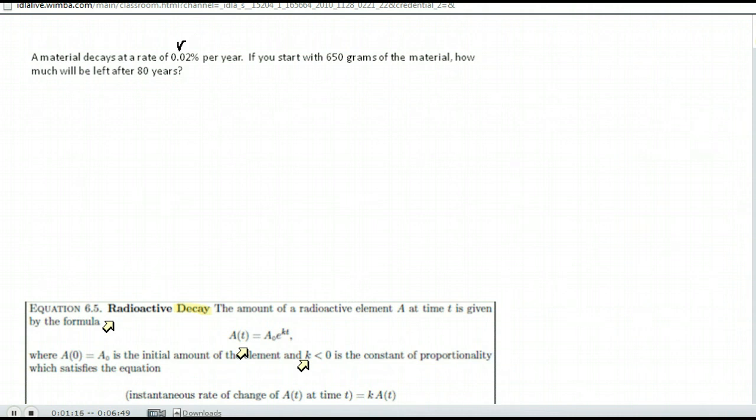Again, when we put that in the formula, we're going to want it to be negative because of the decay. And we also want to change it to a decimal rather than a percent. So we're going to move the decimal two places to the left. So our rate will be 0.0002.